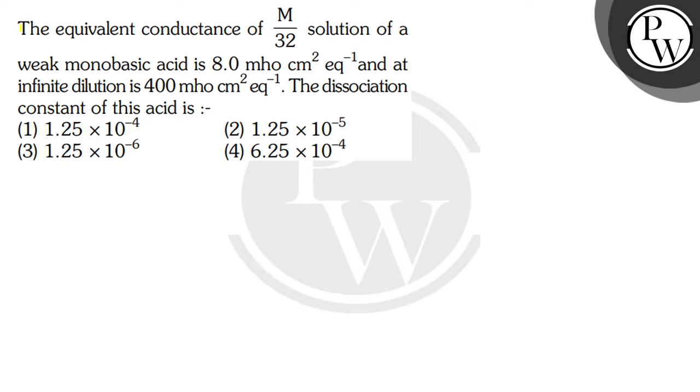Hello everyone, let's read this question. The question says the equivalent conductance of M/32 solution of a weak monobasic acid is 8 mho cm² equivalent⁻¹, and at infinite dilution is 400 mho cm² equivalent⁻¹. The dissociation constant of this acid is: